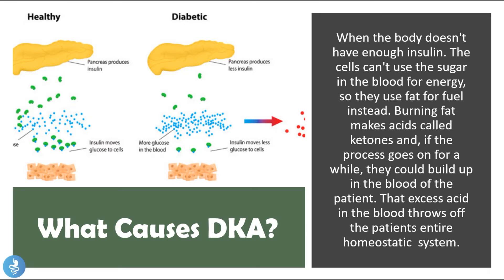When the body doesn't produce enough insulin, cells can't use the sugar in the blood for energy, so they use fat for fuel instead. Burning fat makes acids called ketones, and if this process continues, they build up in the blood, throwing off the patient's entire homeostatic system. Normally, the pancreas produces insulin which moves into the glucose cells so the muscles are able to use them.